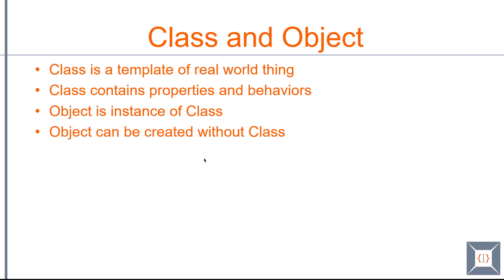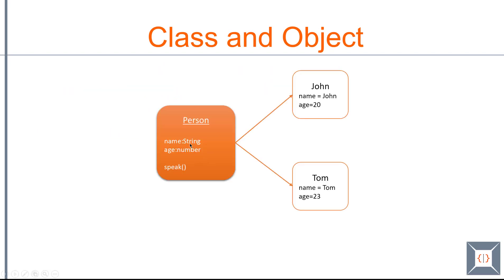Let's see what this means with the help of a diagram. Here we have a class called Person. This Person has a couple of properties: the first one is name, the second one is age, and it also has a behavior called speak. It's basically a function. We have created two objects from this class: the first object is called John and the second object is Tom. Each have their own value for the properties name and age, but they share the same behavior which is speak.